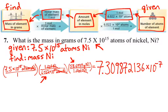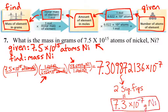So, we have to go with the smallest number, which is two significant figures. So, we round our number to two sig figs. And so, that gives us 7.3 times 10 to the negative 7 grams of nickel.